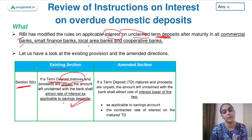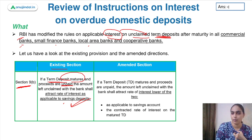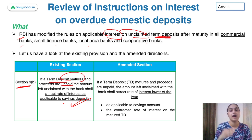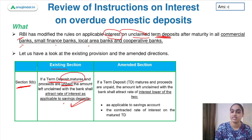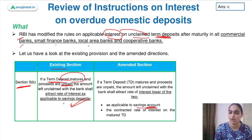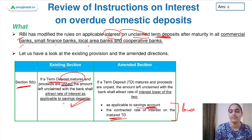Now there are changes. Under the new amendment, the interest rate earned on the unclaimed amount will be whichever is lower: either the savings deposit rate or the contracted rate of interest on the matured term deposit, whichever is lower. That lower rate will now be the interest rate earned on unclaimed term deposits.